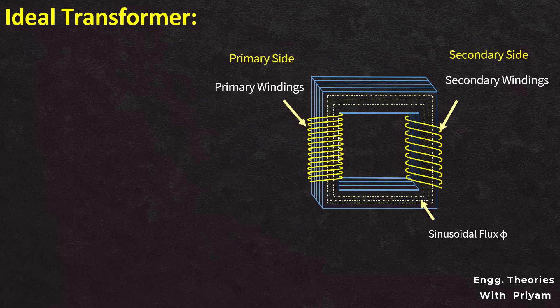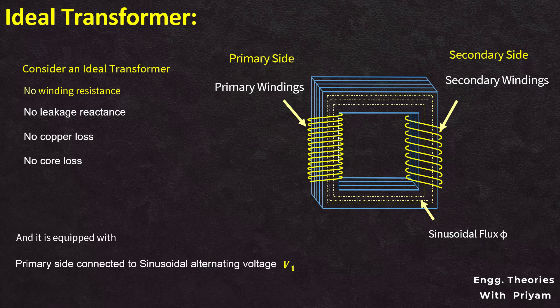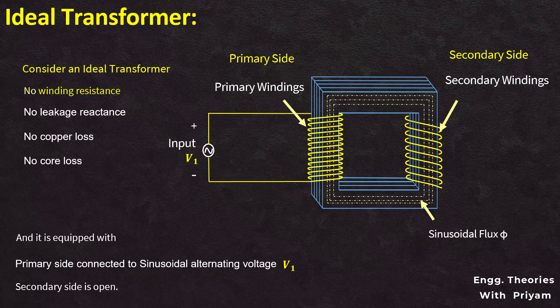In the previous lecture we saw the characteristics of an ideal transformer. In this lecture we will see the phasor diagram of an ideal transformer. Let's consider an ideal transformer which has no winding resistance, no leakage reactance, no copper or I²R loss, and no core losses. Let's say it is equipped with a primary side connected to an alternating voltage source V1, and the secondary side is open.